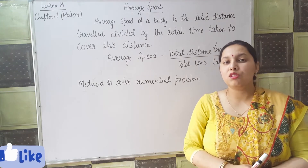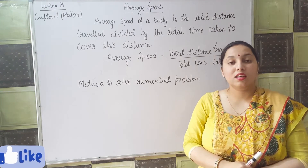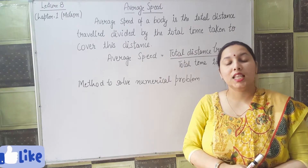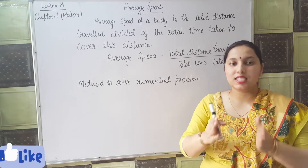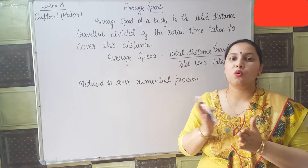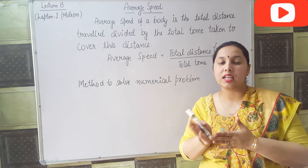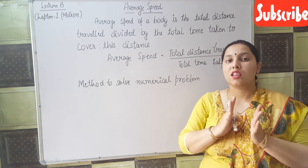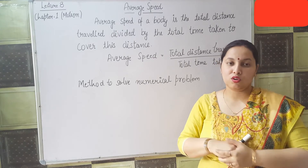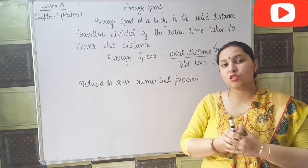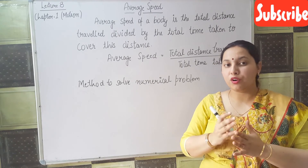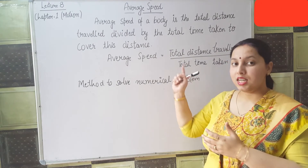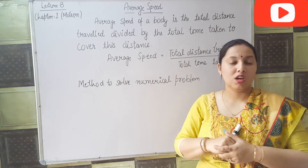Think about when you went to the market in a car. When there is a crowded place, you cover less distance. When the road is clear, you cover more distance. It means the speed of your car is not constant. So how do we find the speed of this non-uniform motion? For this, we have the concept of average speed.